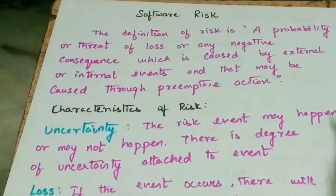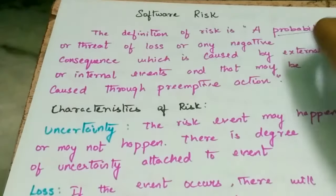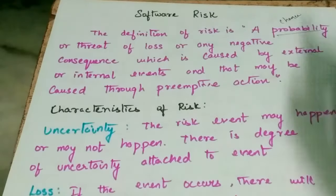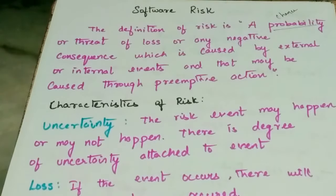That's why the risk is a software concern. One risk is if it comes to a budget problem, or if it comes to a user problem, then the risk is a probability. Now we are going to get the correct coding, so that's a fault. So this risk is external.